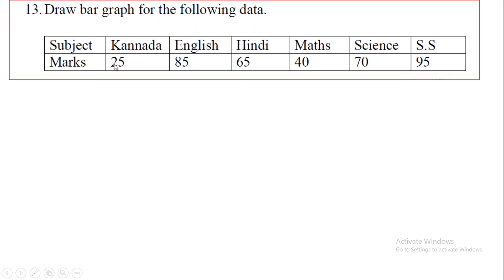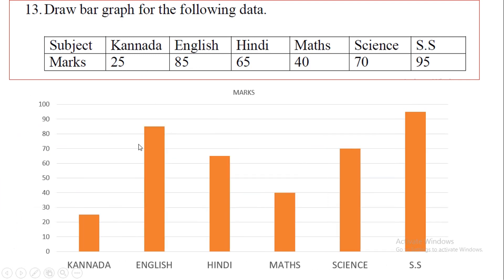Draw a bar graph for the following data: Kannada 25, English 85, Hindi 65, Maths 40, Science 70, Social Studies 95. On graph paper, draw the y-axis from 0 to 100 in intervals of 10, and on the x-axis mark the subjects: Kannada, English, Hindi, Maths, Science, and SS. Draw bars to the corresponding heights to get the bar graph.